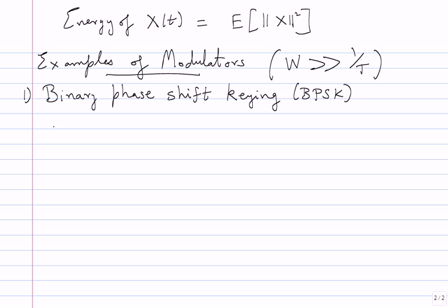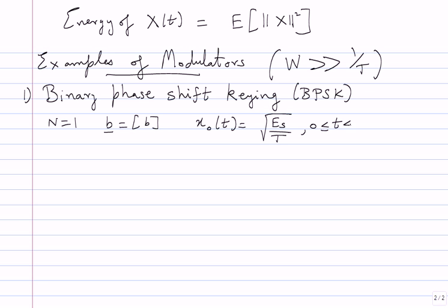For BPSK, we set N=1, sending one bit at a time. So my entire vector B becomes simply one bit b, and I need just two waveforms. I set x_0(t) to be constant at sqrt(E_s/T) within the support [0, T], and x_1(t) to be minus sqrt(E_s/T) in the same support. I chose sqrt(E_s/T) so that the energy of x_0(t) works out to E_s, which is a nice notation for signal energy.